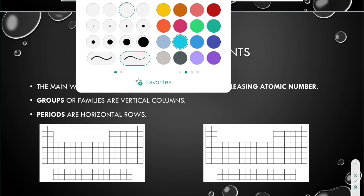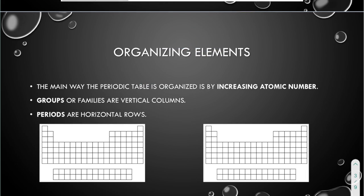Organizing the elements. The main way that the periodic table is arranged is by increasing atomic number. That is the main way. They go left to right, the numbers go up. So start with one, hydrogen is number one, helium is number two.